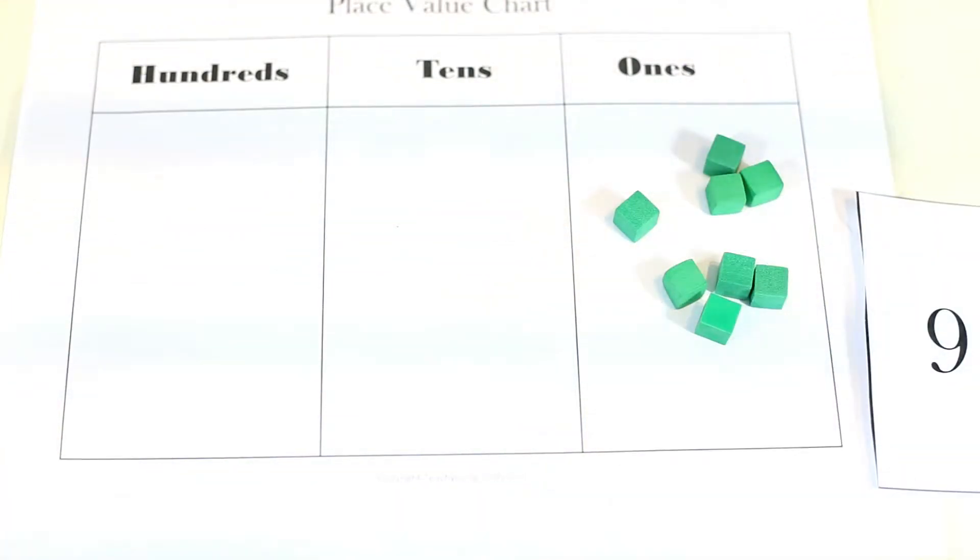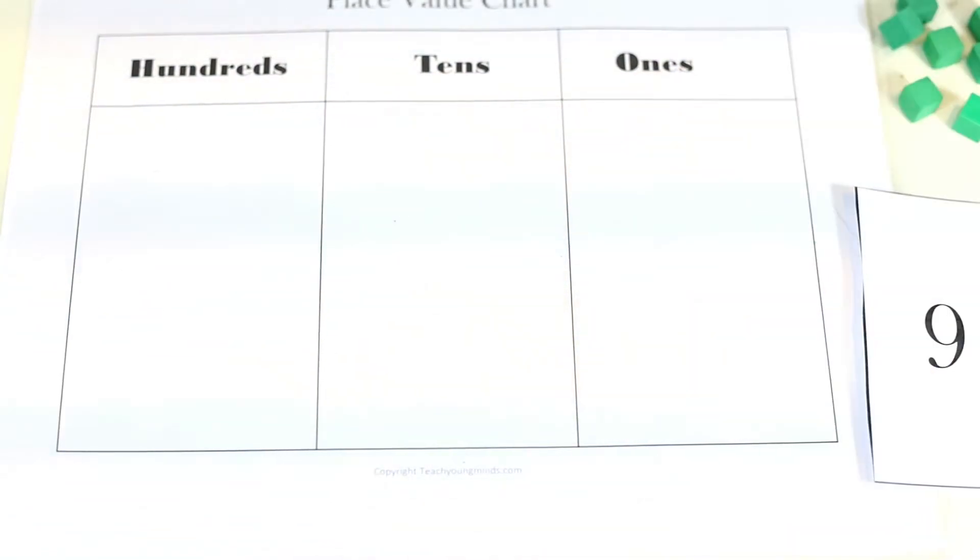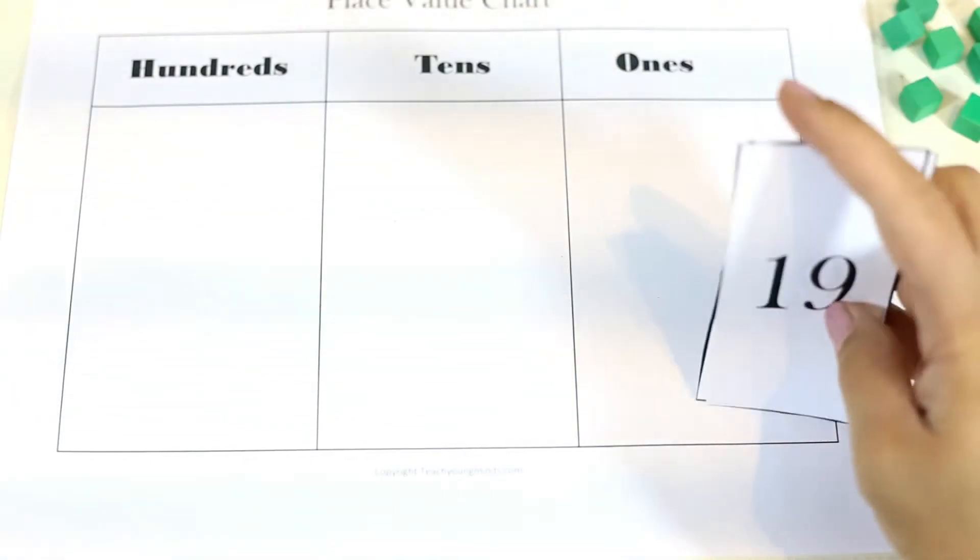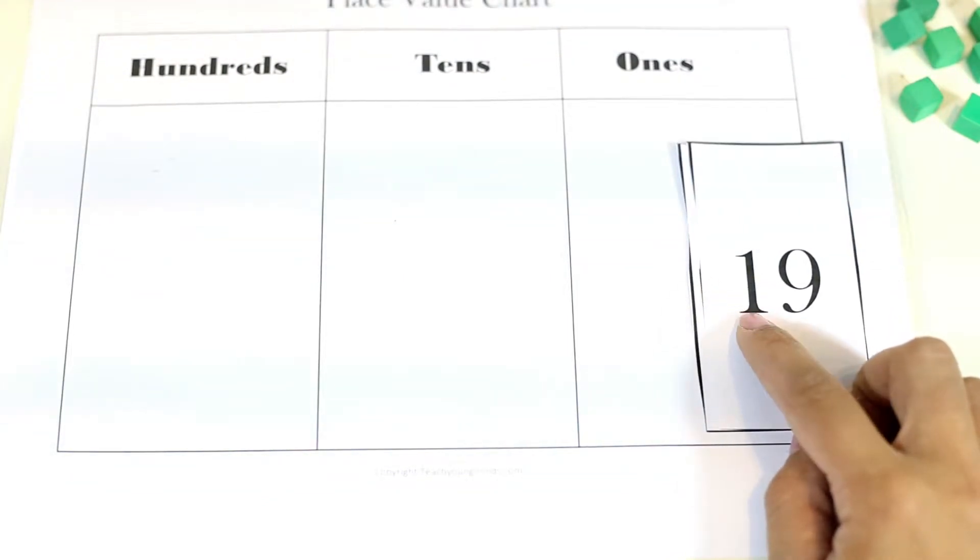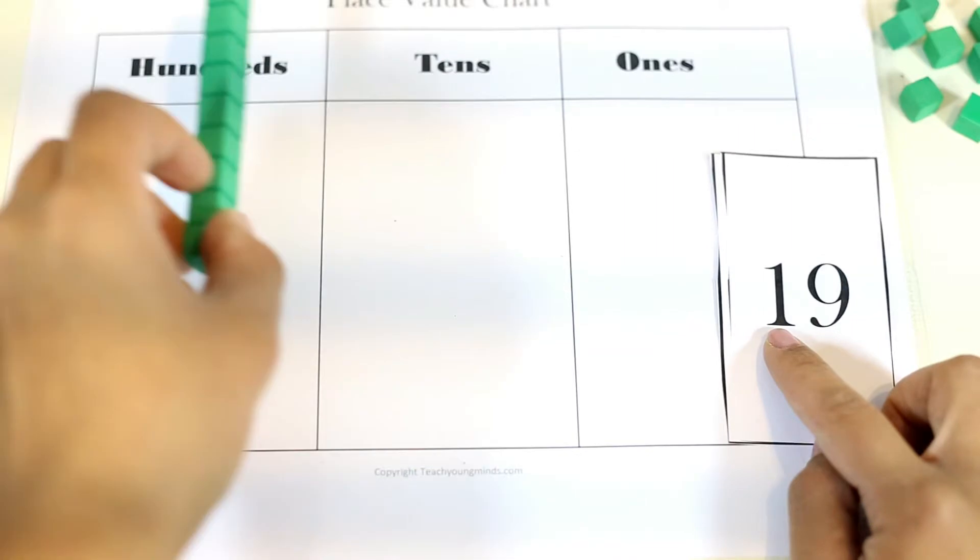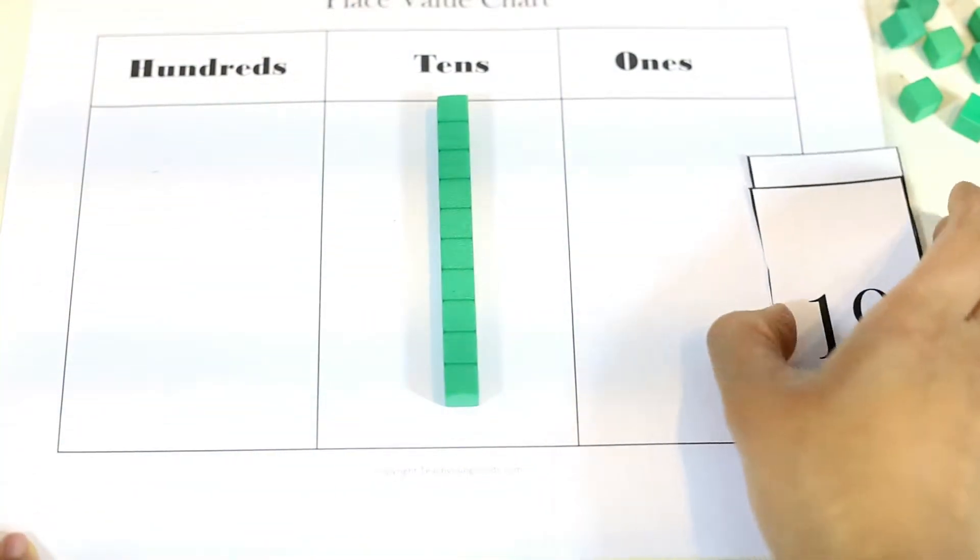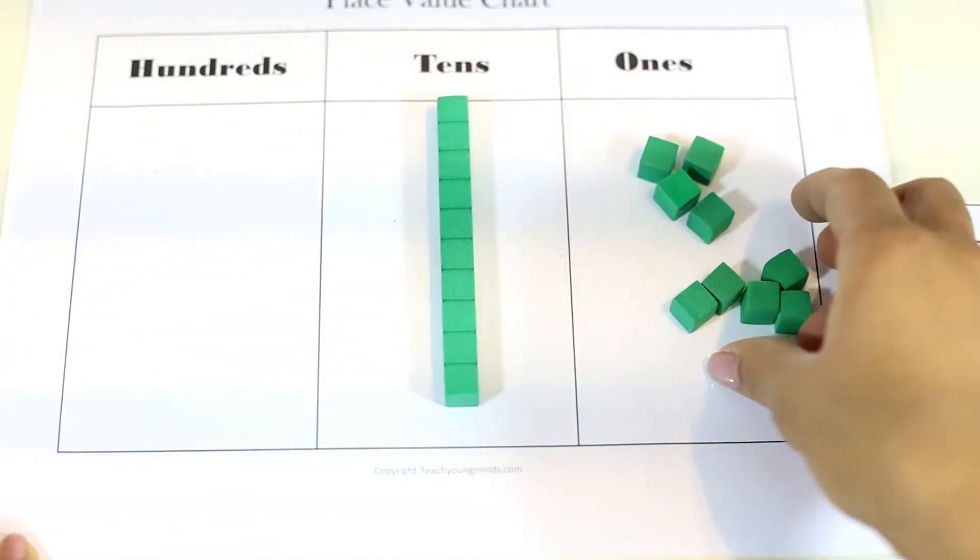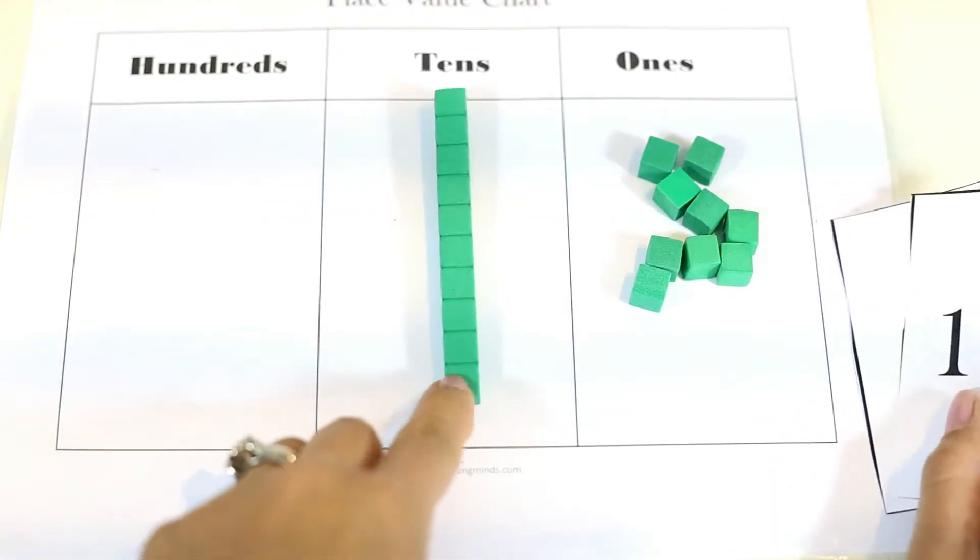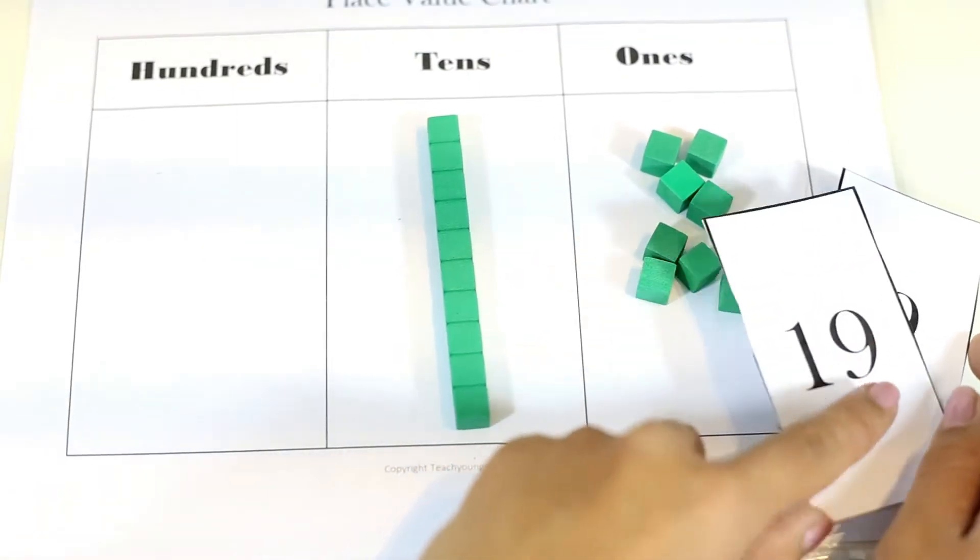The learner just puts down 9 ones and clears the board. Say they get the number 19, a two-digit number. Something they have to understand is the first digit here is in the tens place. So it's 1 ten, and this number is in the ones column. So they put 9 down. So 1 ten and 9 ones is 19.